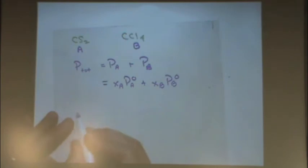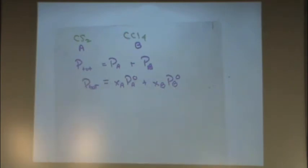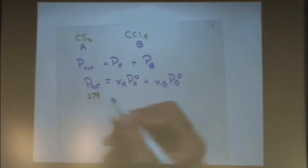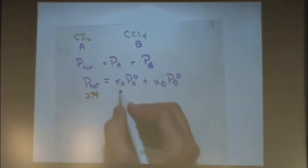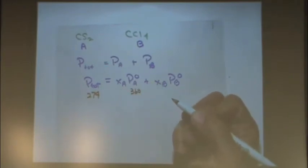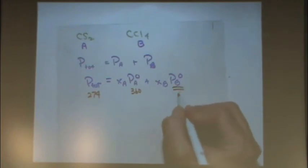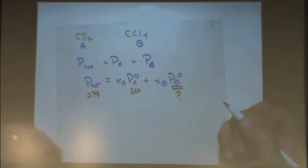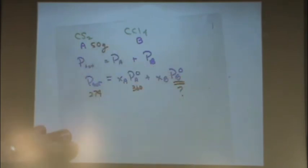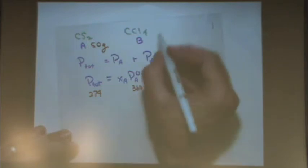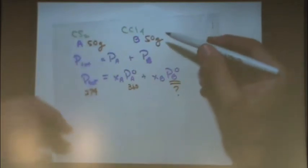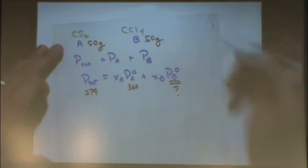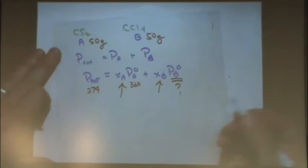P total is given, that is 274 in the question. The vapor pressure of pure carbon disulfide, that's A, is 360. This is the one we want to know. There's 50 grams of this one, 50 grams of this one, so I've got to find the mole fraction, change it to moles, stick that in here, and I only have one thing to solve for.